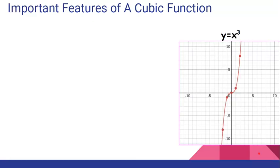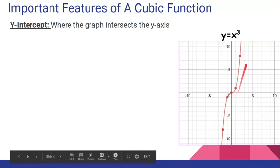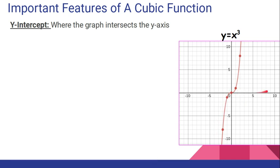Some important features that we're going to look at about a cubic function — here's that same parent function that I just graphed. The y-intercept is not a new vocabulary word for you; that's where the graph intersects the y-axis. This graph, the parent function, crosses here at the origin at (0, 0). I just want the y value, so I say that y equals 0 because it crosses at (0, 0).